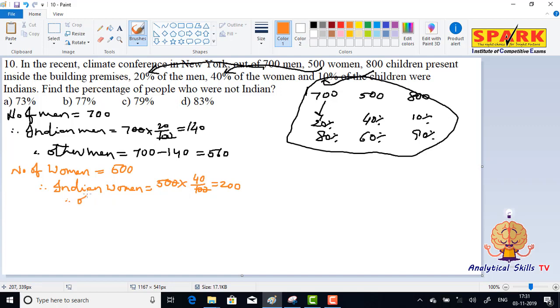Therefore, other women, meaning women from other countries, equals 500 minus 200, that is 300.